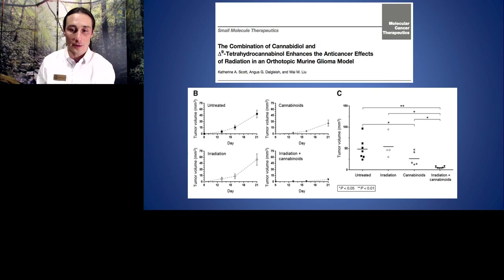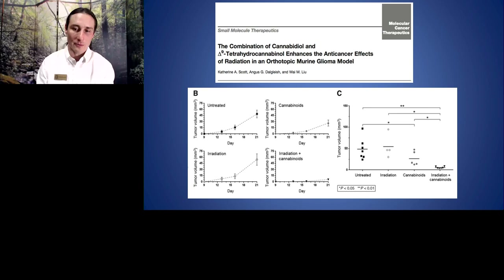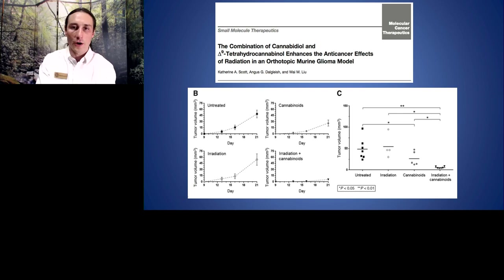Besides enhancing chemotherapy effects, cannabis has been shown to enhance the effects of radiation therapy. Looking at the rate of growth of glioma over 21 days: untreated animals showed rapid growth; cannabinoids alone (CBD and THC combination) showed modest results; radiation therapy alone showed modest results. But the combination of radiation and cannabinoids was super impressive — there was almost no growth. This is summarized in section C, showing how radiation plus cannabinoids really outperformed all other interventions.